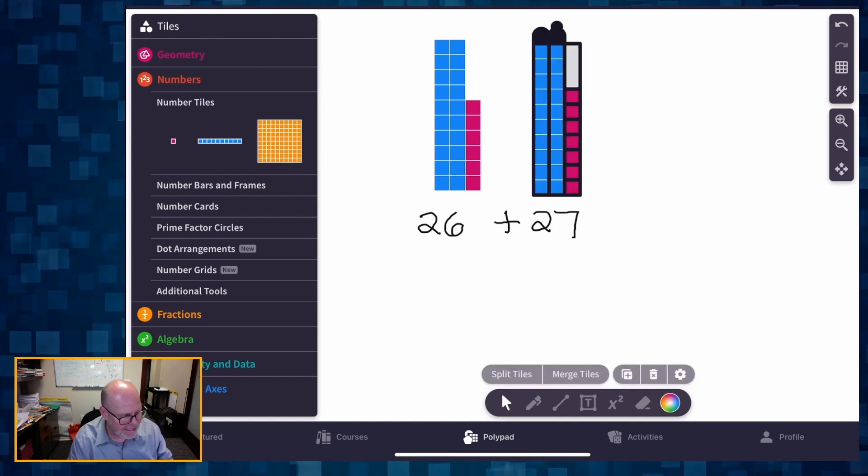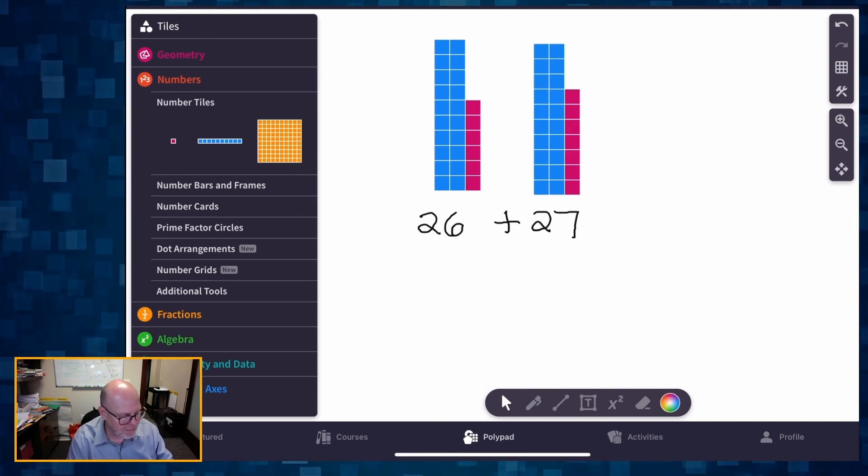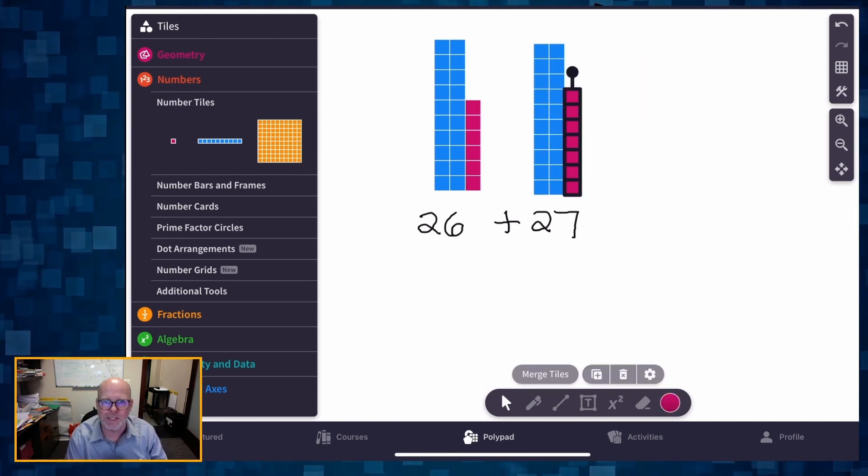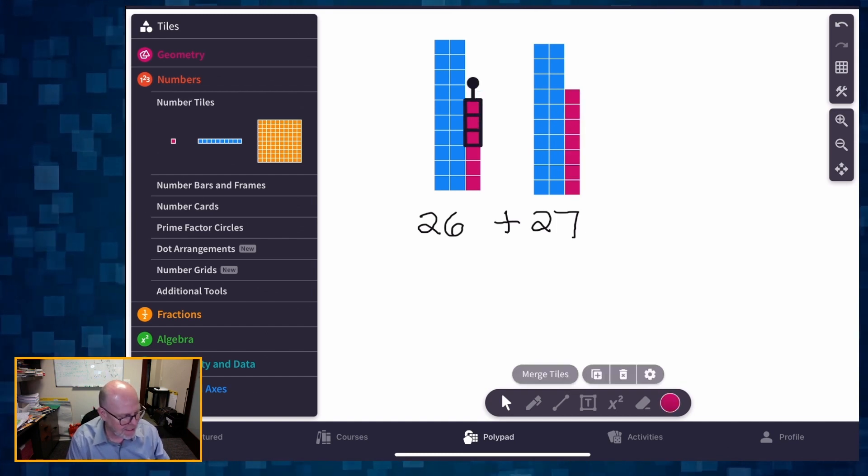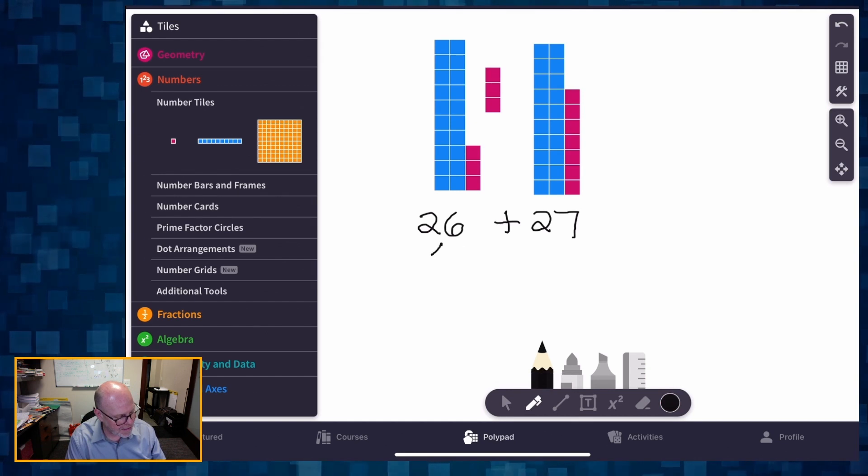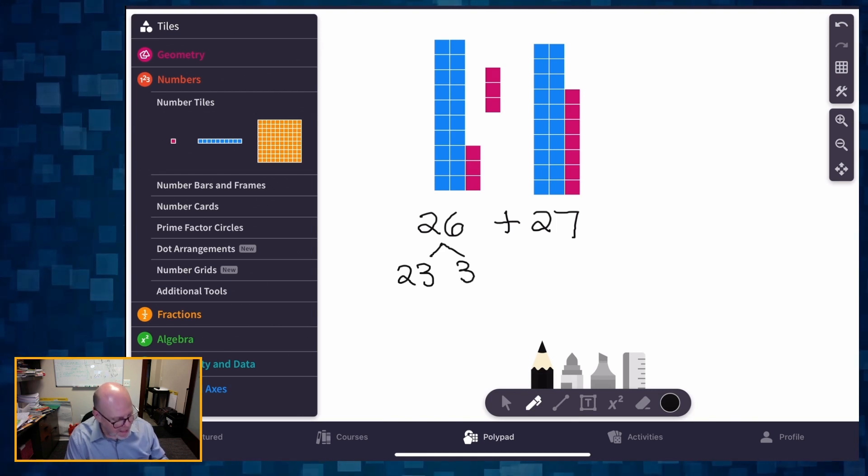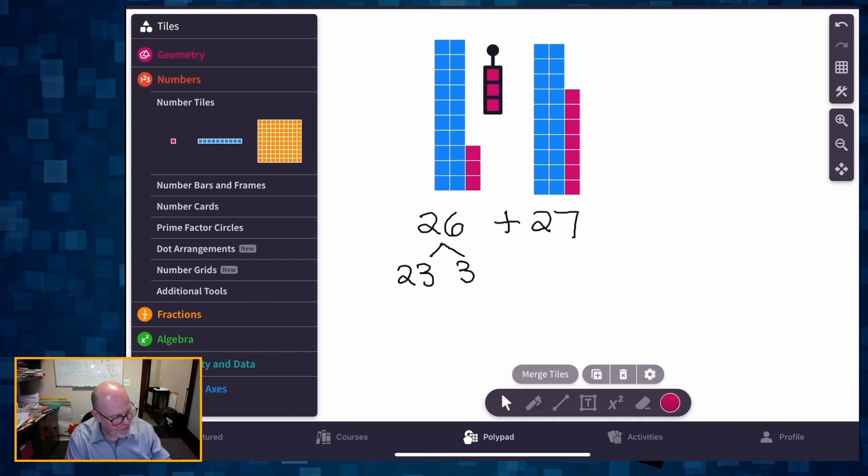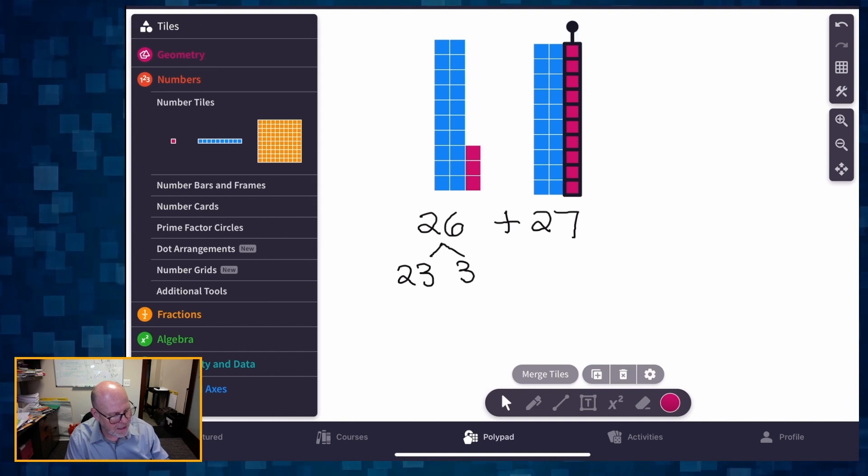Well, it looks like he needs three more. So what I'm going to do is I'm going to think of this 26 as really 23 plus that extra 3. And then what I'm going to do is I'm going to take that 3 and I'm going to move it over here and I've created a full stick of 10.